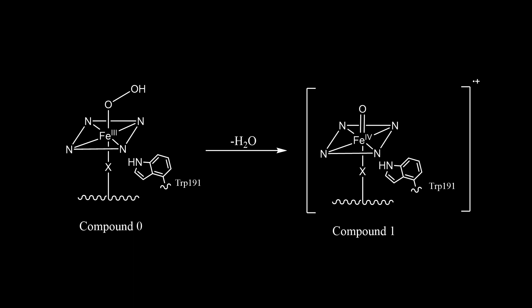Compound one exists as a radical cation with the iron center in plus four oxidation state. The radical cation in CCP does not form a porphyrin radical but instead forms a tryptophan 191 radical.